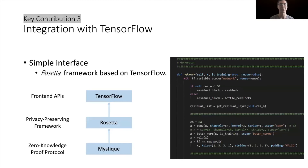Our third key contribution is integration with TensorFlow. We provide a simple interface for non-crypto experts to use zero-knowledge proofs for machine learning tasks. At the bottom, we have our zero-knowledge proof protocol, Mystic, integrated into a framework called Rosetta, which is a privacy-preserving computation framework. Rosetta also uses the TensorFlow front end, so anyone using the TensorFlow API can prove a statement in zero-knowledge for machine learning tasks.